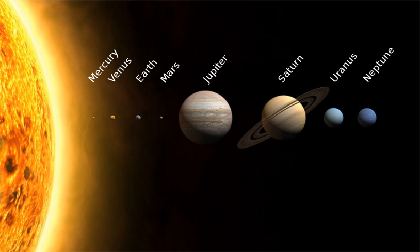Jupiter, the largest planet, is 5.2 AU from the Sun and has a radius of 71,000 kilometres, or 0.00047 astronomical units, whereas the most distant planet, Neptune, is 30 astronomical units — 4.5 times 10 to the 9 kilometres — from the Sun. With a few exceptions, the farther a planet or belt is from the Sun, the larger the distance between its orbit and the orbit of the next nearer object to the Sun. For example, Venus is approximately 0.33 AU farther out from the Sun than Mercury, whereas Saturn is 4.3 AU out from Jupiter, and Neptune lies 10.5 AU out from Uranus. Attempts have been made to determine a relationship between these orbital distances, for example the Titius-Bode law, but no such theory has been accepted.